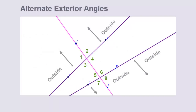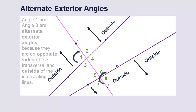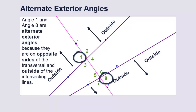Now, when the angles are outside of the intersecting lines but still on opposing sides of the transversal, we change the word interior to exterior and call them alternate exterior angles. A transversal intersecting two lines forms two pairs of alternate exterior angles.